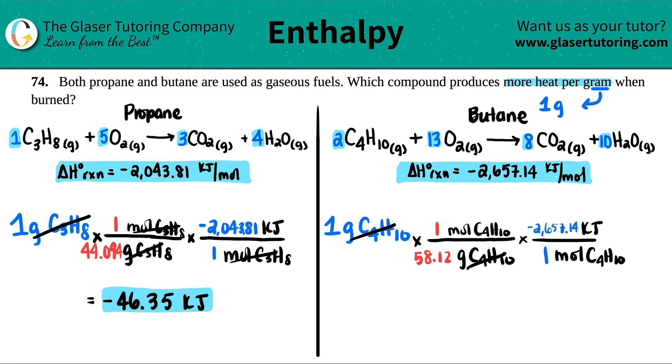Perfect. Mole's canceled out. We now have our heat left. How much energy is going to be produced. So let's see. 2657.14 divided by 58.12. So I get a negative 45.72 kilojoules. So when one gram of butane is burned, we're going to produce out or release into the environment, it's going to get hot 45.72 kilojoules.